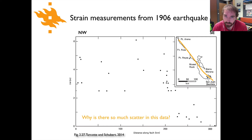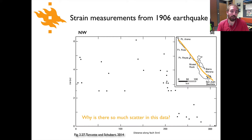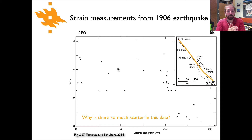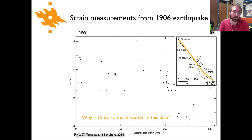So why is there so much scatter in this data? The answer is that this is simply the reality of strain measurements in a natural setting. The earth is not a continuous homogeneous medium and these fault systems that form are going to be affected by variations in the local geology. The faults themselves may have a single dominant strand but may splay off onto other faults, and so the scatter that you observe is just the result of the natural variability in deformation of a complicated medium like the earth's crust.